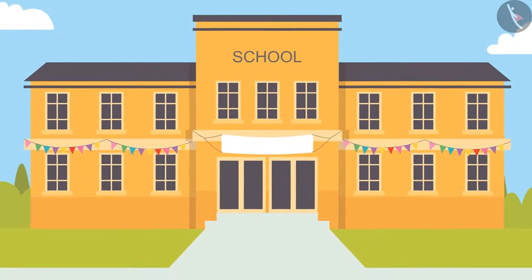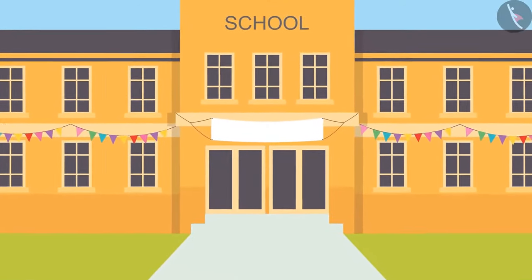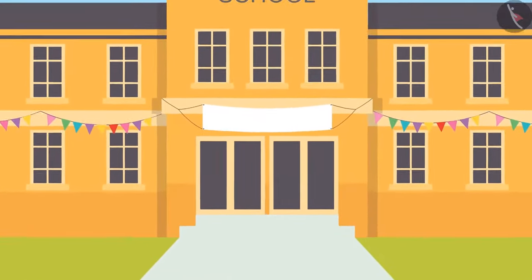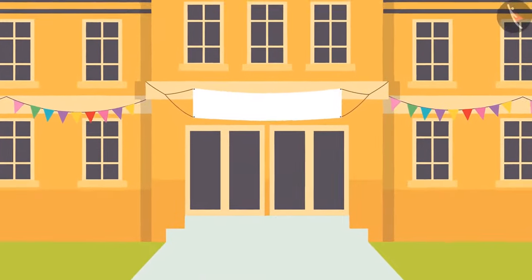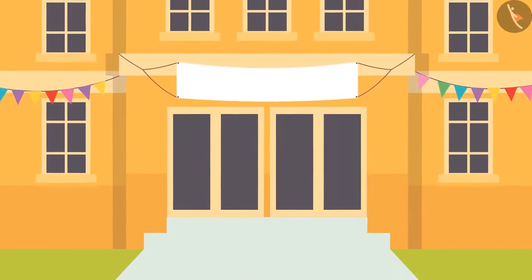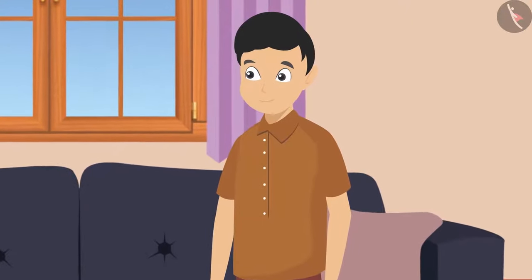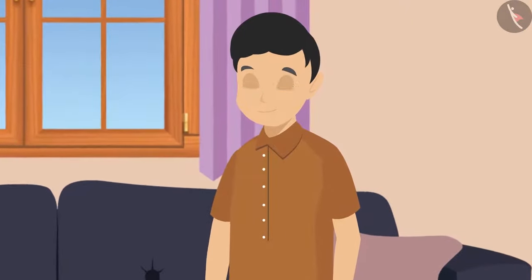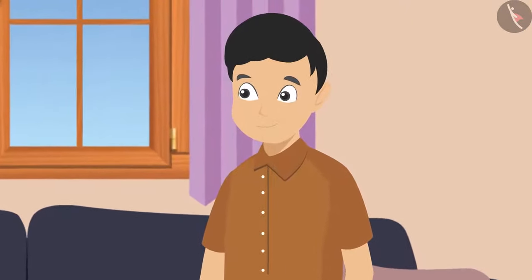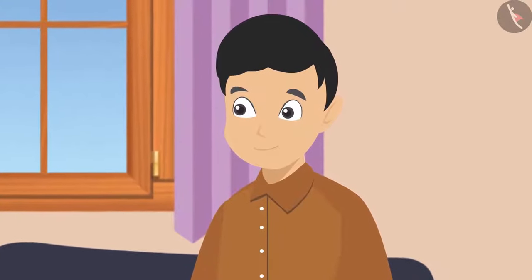An exhibition was going to be held in Ankit and Pawan's school. Both decided to take part in it together. They had to show an experiment related to air. Pawan has come to Ankit's place to discuss about the project.